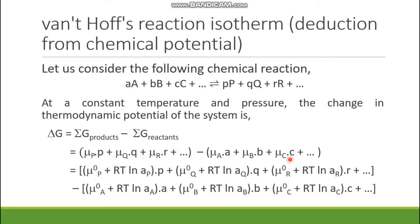Now we substitute the value of μP in terms of μ⁰P, and μA in terms of μ⁰A. We know that μ = μ⁰ + RT ln(a). So for P it should be (μ⁰P + RT ln(activity of P)) times p. Similarly for all products and reactants — for A it is (μ⁰A + RT ln(activity of A)) times a.